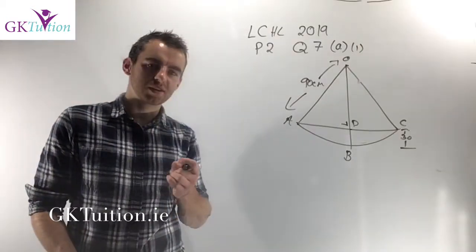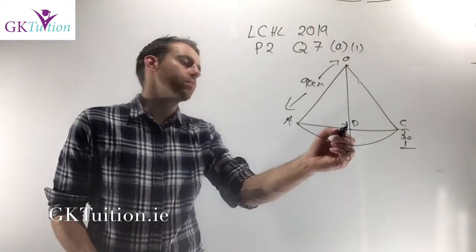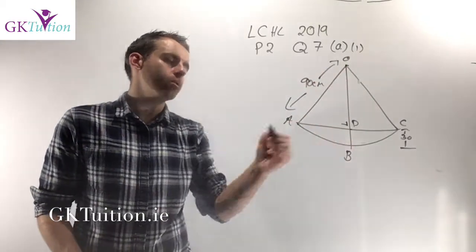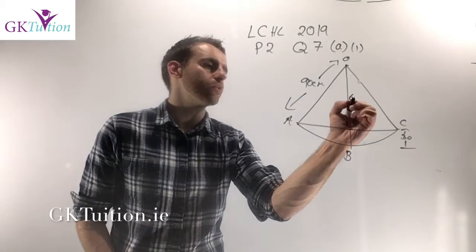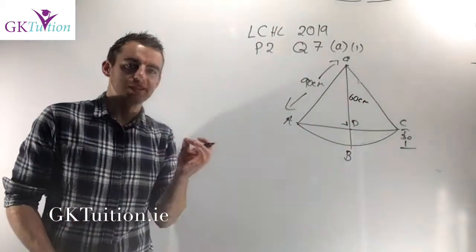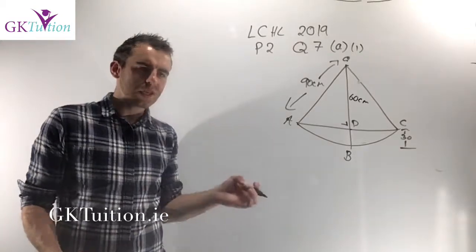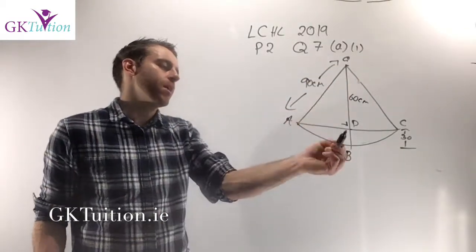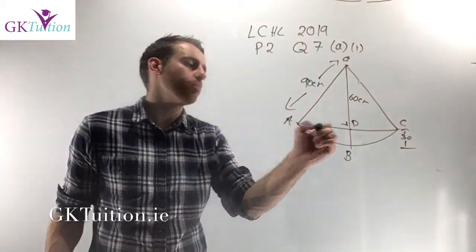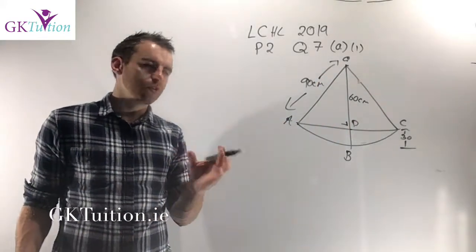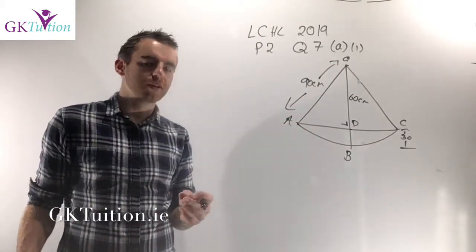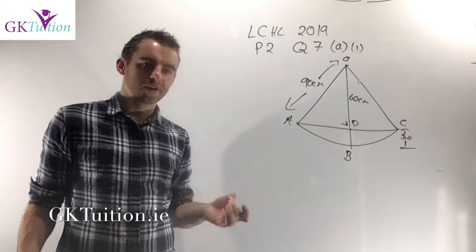If DB is 30 centimetres and the whole distance OB is 90 centimetres, then subtracting the two, the distance from O to D must be 60 centimetres. We're also told that OB is perpendicular to AC, so if you look at triangle O, A, D, it's a right-angle triangle. I know two sides, so I can find the third side.